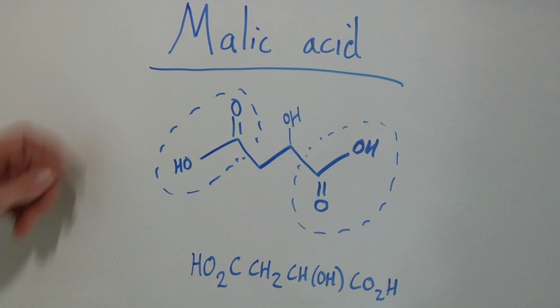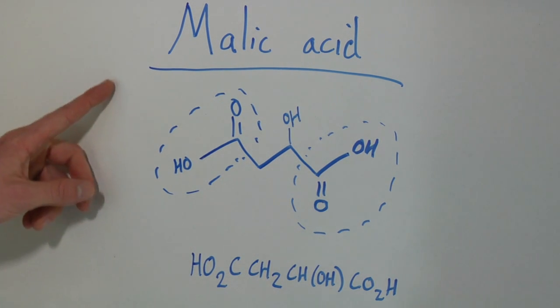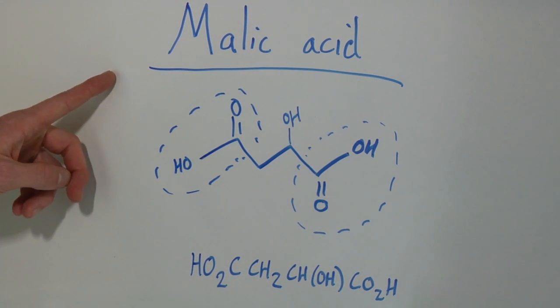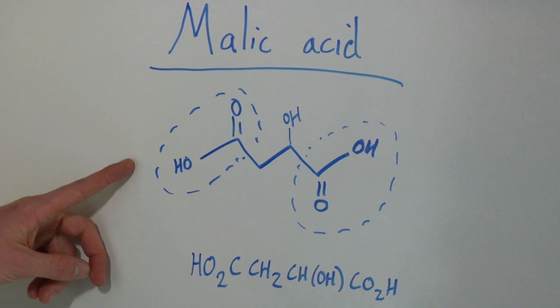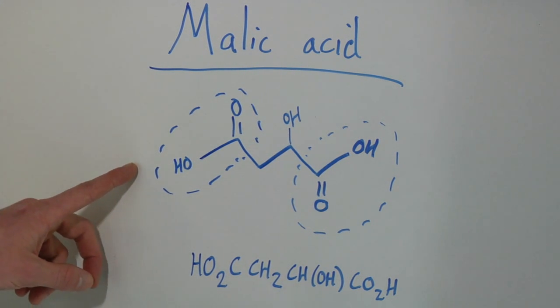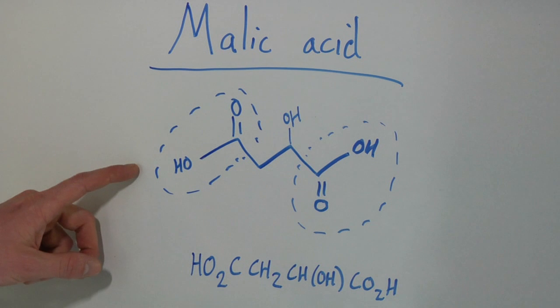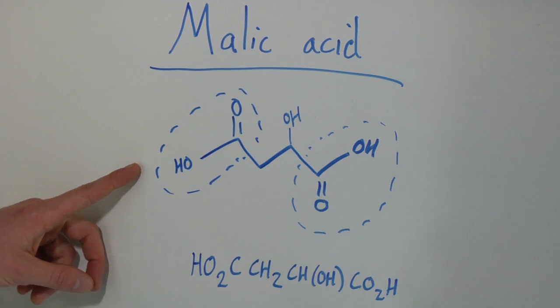We're going to look at the chemical composition here briefly and then talk about a couple of examples of where it is found. Malic acid is an organic molecule — a bio-organic molecule, you might say — and its main characteristic is that it has two carboxyl groups.